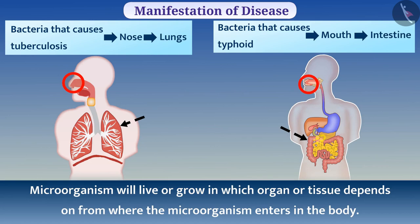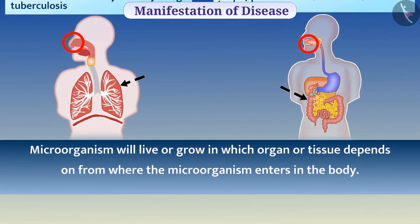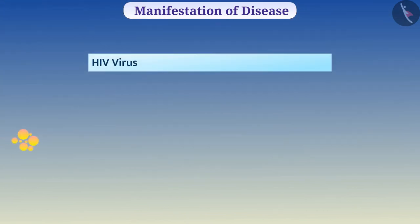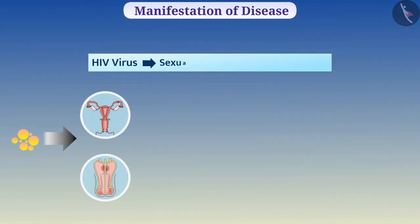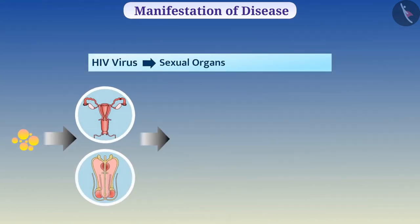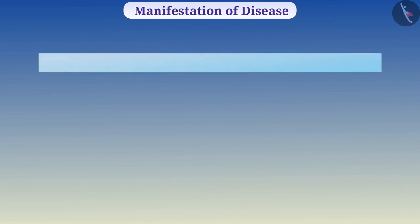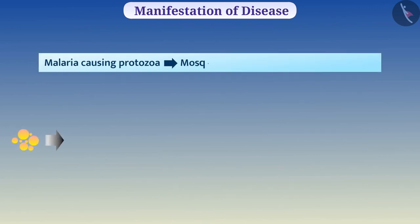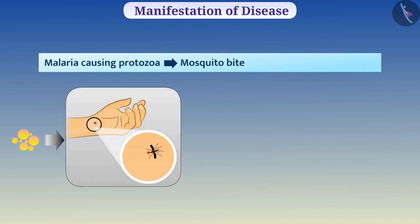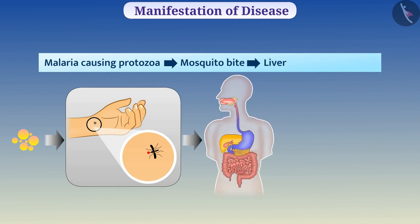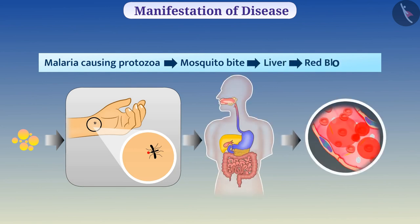But this is not always the case. For example, HIV virus enters the body via sexual organs and grows inside white blood cells. Similarly, the malaria-causing protozoa enters through a mosquito bite and lives in the liver, and after that grows inside red blood cells.